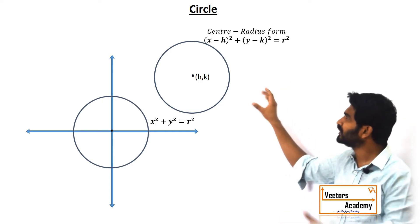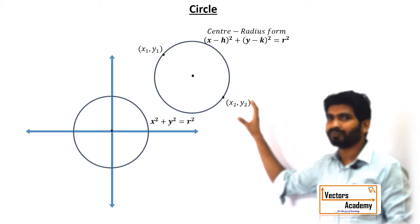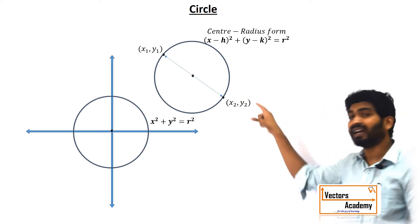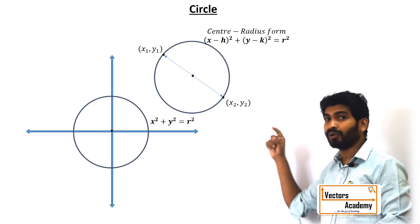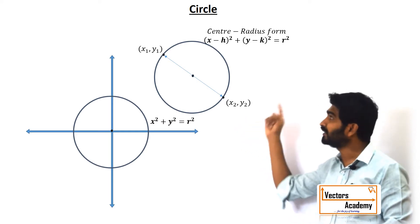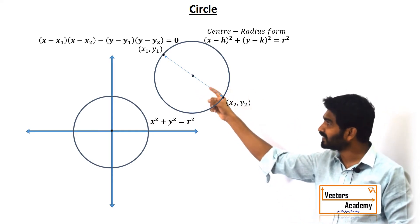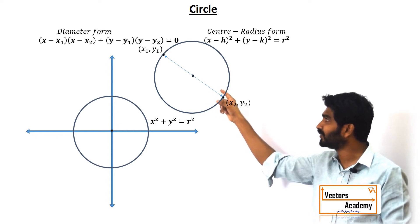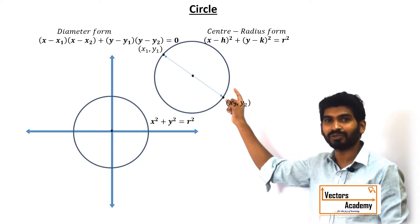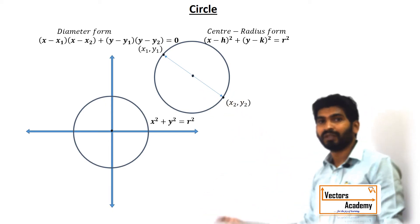Now suppose the center of the circle is not known but the endpoints of the diameter of the circle are known. We can also find the equation of the circle in the diameter form, which is (x - x₁)(x - x₂) + (y - y₁)(y - y₂) = 0. That is called the diameter form.